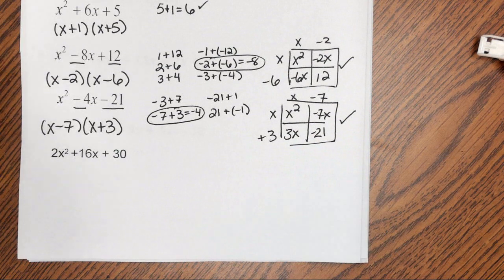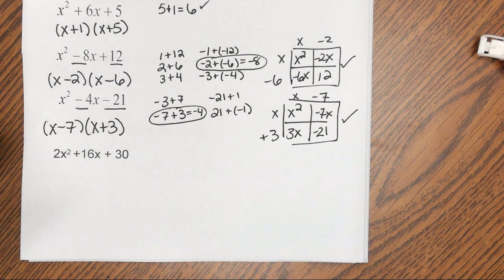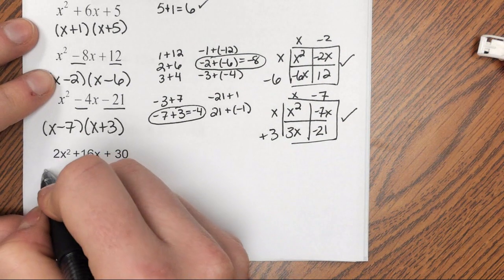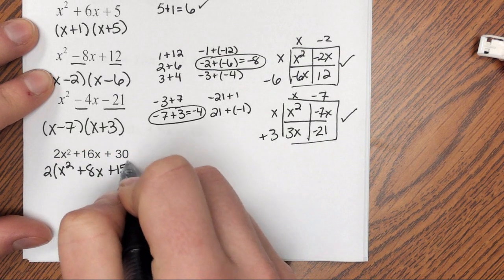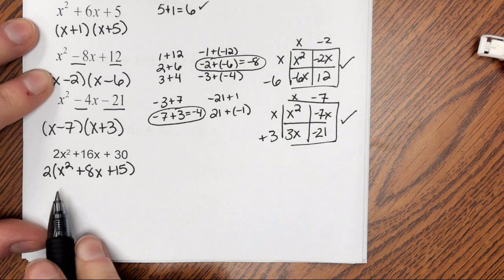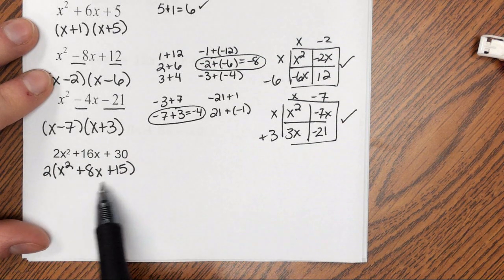Last example, I have 2x squared plus 16x plus 30. I want to check for that GCF first, and I have a GCF of 2, so I'm going to go ahead and factor that out. So that results in 2 times x squared plus 8x plus 15. And then I'm going to focus on factoring the trinomial inside.